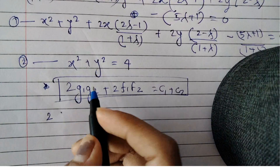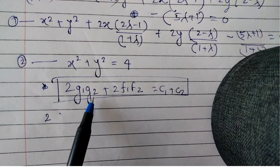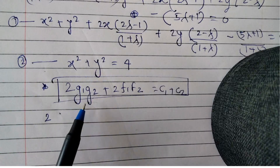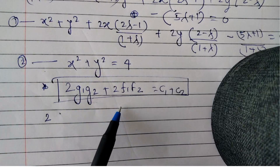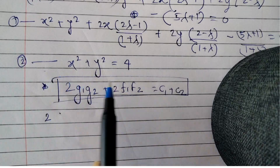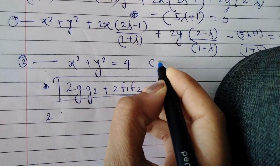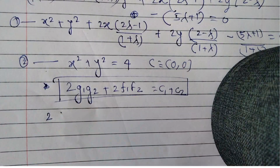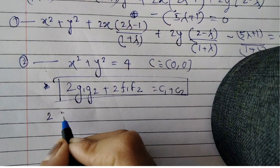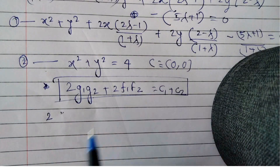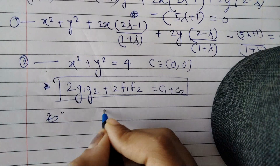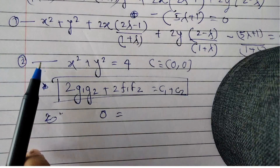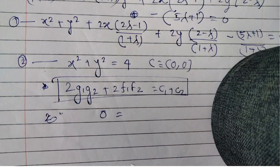For the second circle x² + y² = 4, g₂ = 0 and f₂ = 0, so the entire left-hand side becomes 0. Therefore we can directly write: 0 = c₁ + c₂, where c₁ and c₂ are the constants of the two circles.